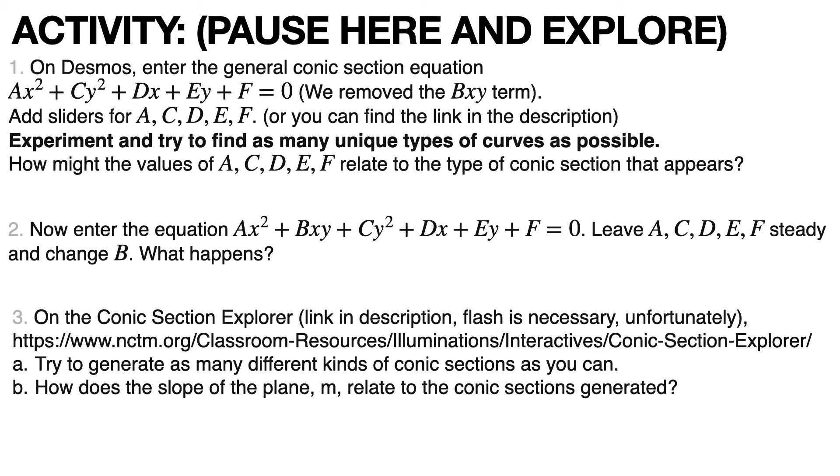Question two, now enter the full equation with the bxy term, that is, ax squared plus bxy plus cy squared plus dx plus ey plus f equals 0. You leave a, c, d, e, and f the same, and only change b, and see what happens.